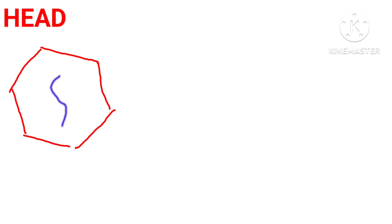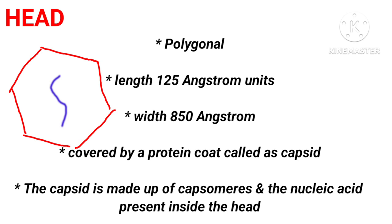Let us first discuss about the first main part of a Bacteriophage, that is the head. The head of a Bacteriophage is polygonal and it has a length of 125 Angstrom units and a width of 850 Angstrom units. It is covered by a protein coat called Capsid. The Capsid is made up of Capsomeres, and there is a nucleic acid present inside the head, which could be either DNA or RNA.